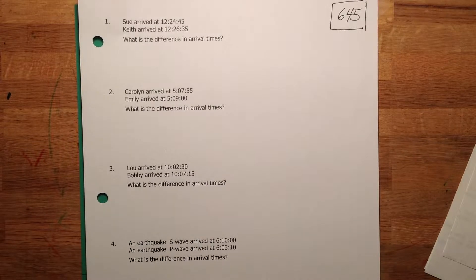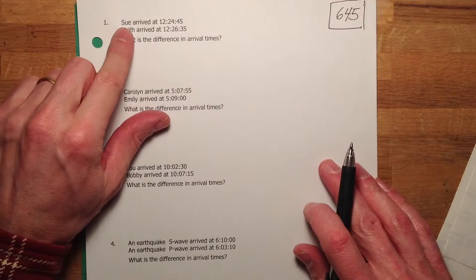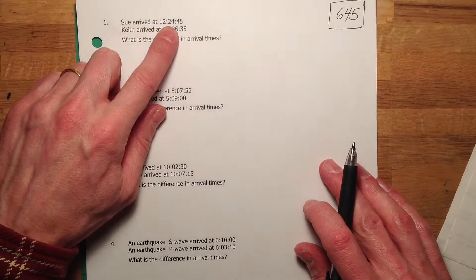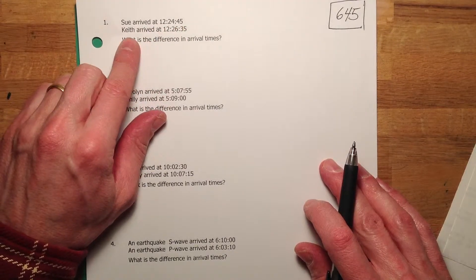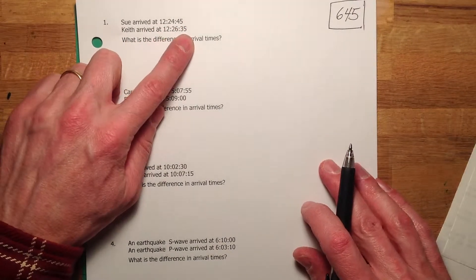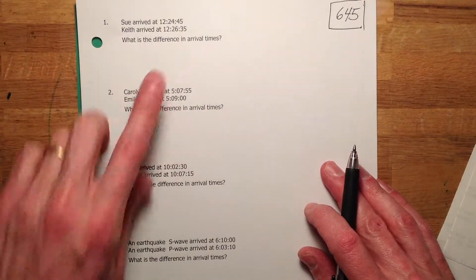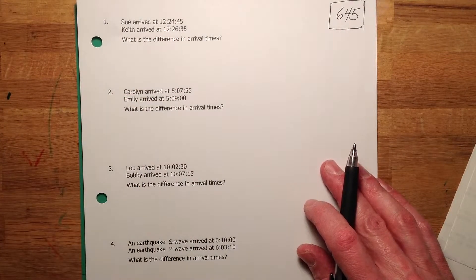Hi, everyone. Mr. Gazda here. 645. We're going to be doing time math. Check this out. Sue arrived at 12:24:45. Keith arrived at 12:26:35. What is the difference in the arrival times of Sue and Keith?